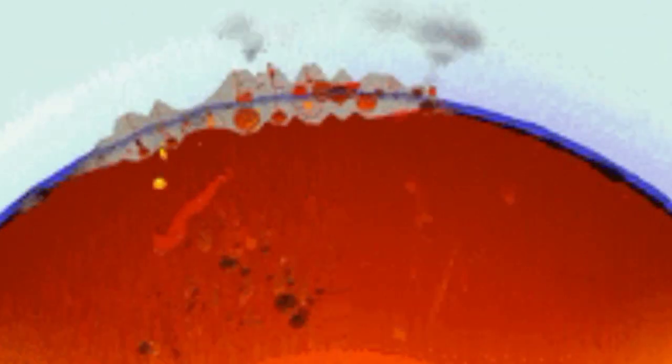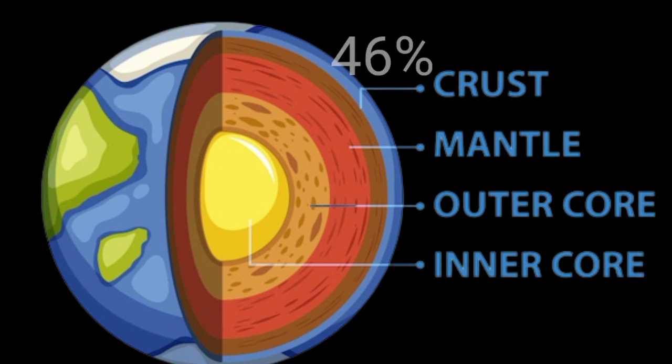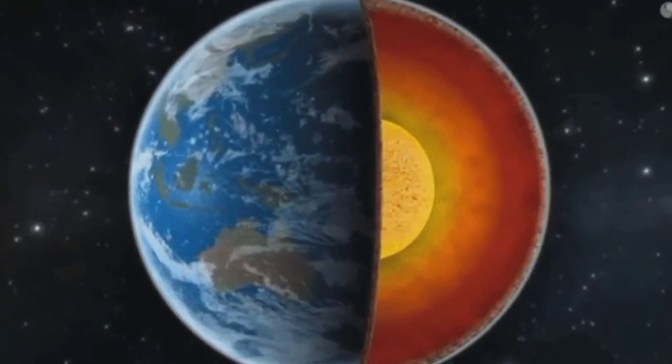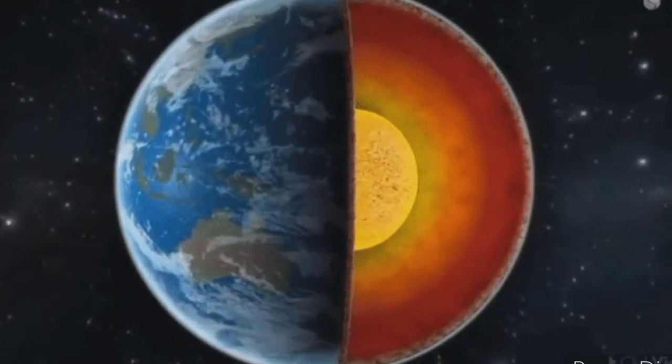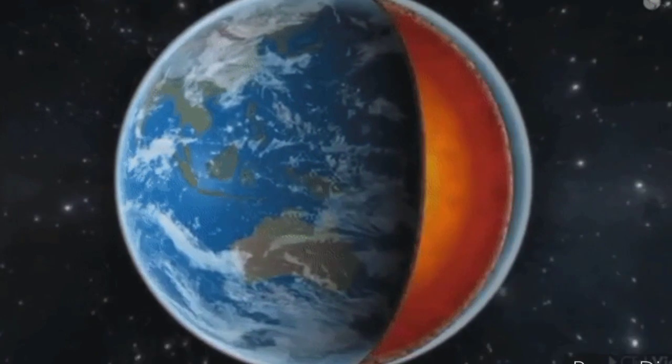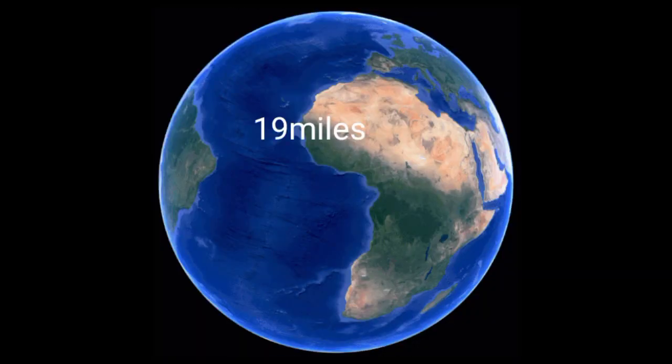If you sample the Earth's crust, you would find that around 46 percent of it is oxygen. The crust is Earth's thin rocky outer layer. At its thickest, the crust is about 19 miles thick.